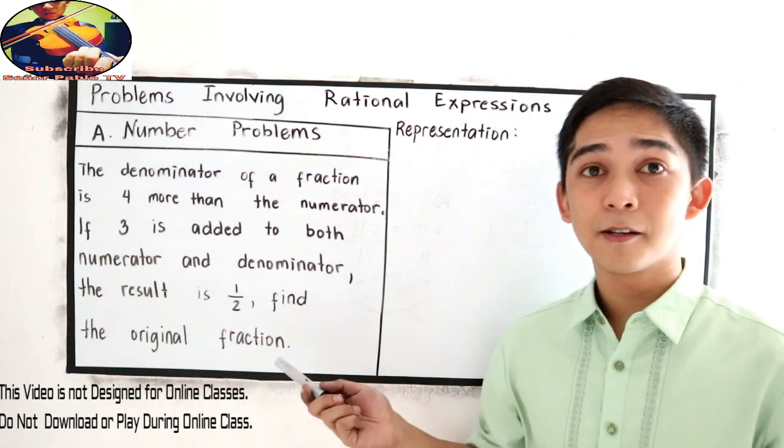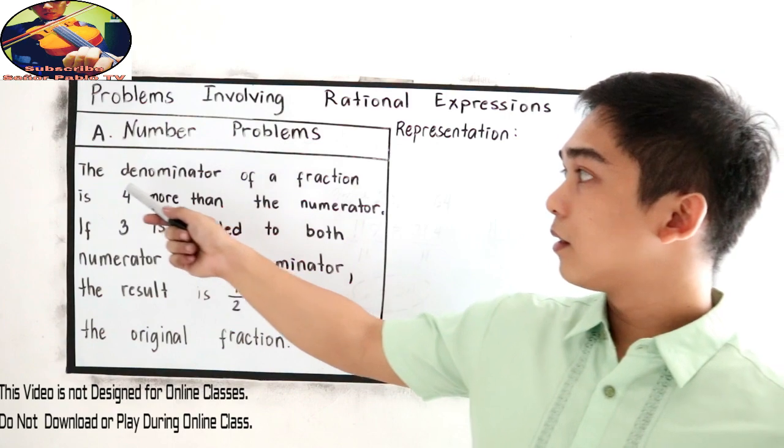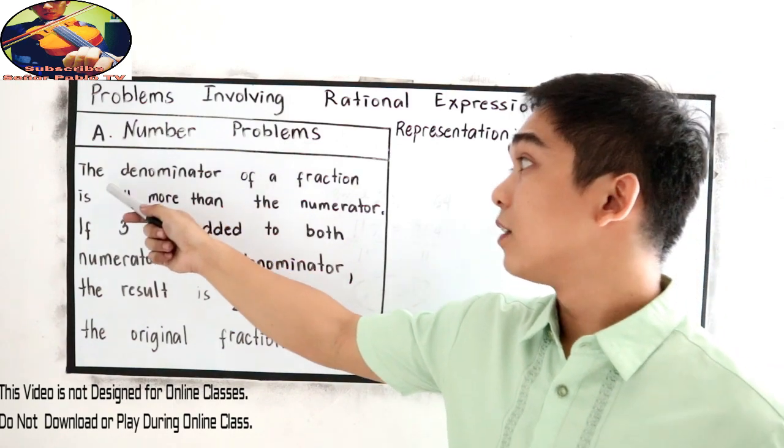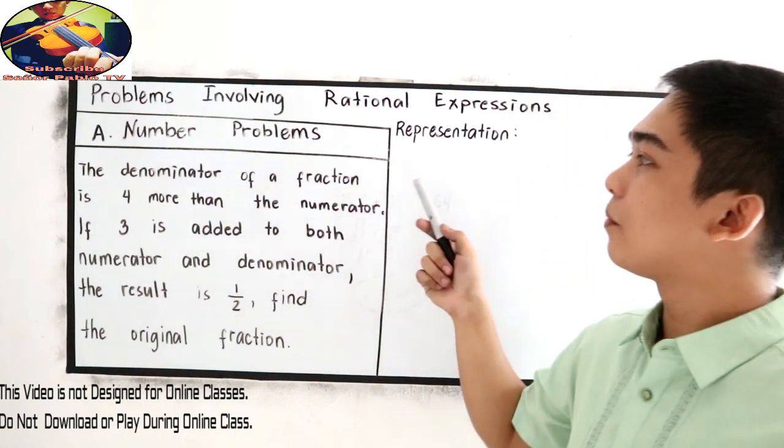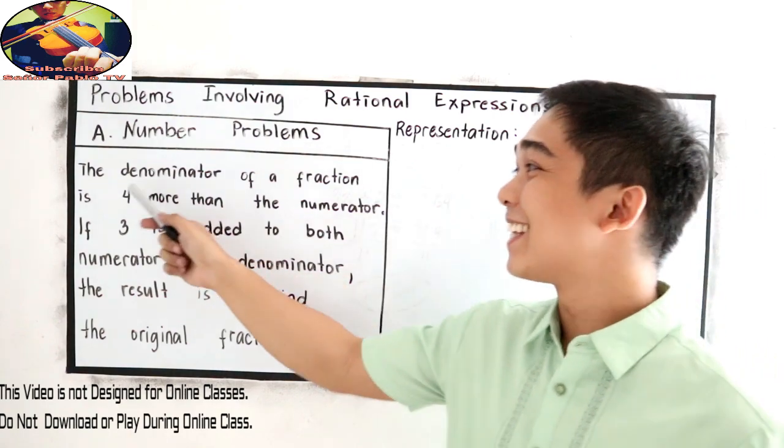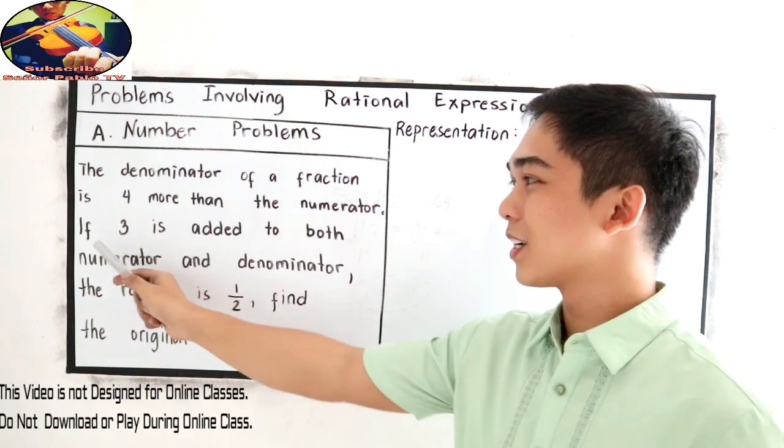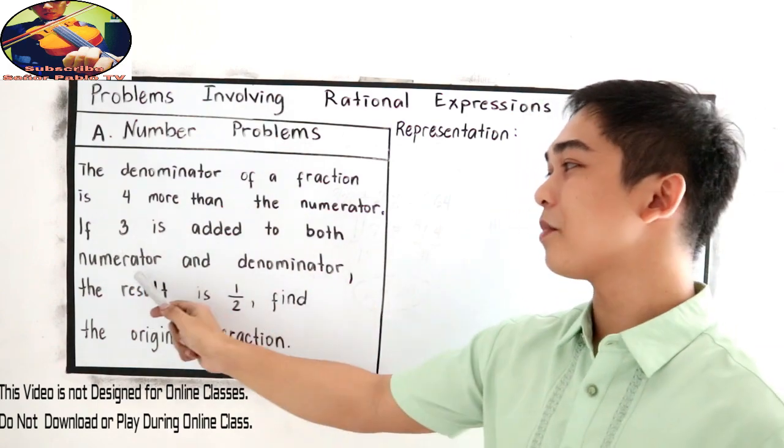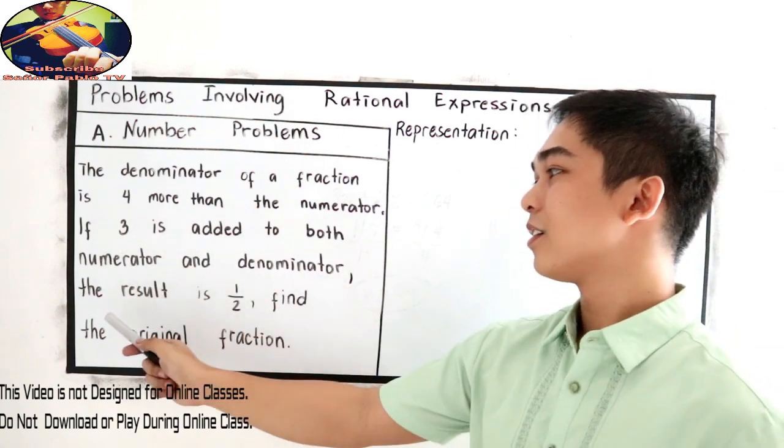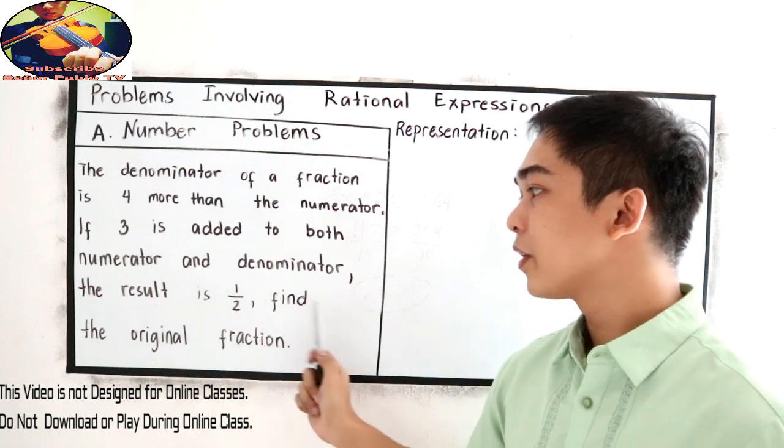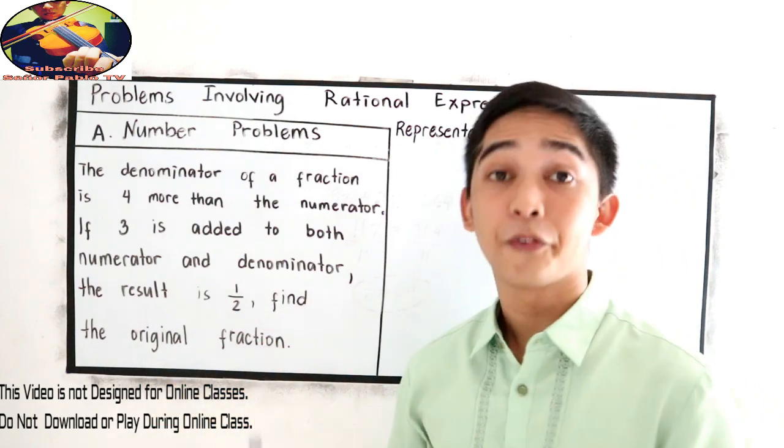The problem is the denominator of a fraction is four more than the numerator. If three is added to both numerator and denominator, the result is one half. Find the original fraction.